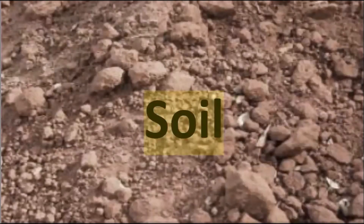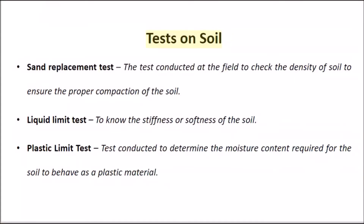Tests on Soil. Sand Replacement Test: Conducted in the field to check the density of soil and ensure proper compaction. Liquid Limit Test: Used to determine the stiffness or softness of the soil. Plastic Limit Test: Conducted to determine the moisture content required for soil to behave as a plastic material.